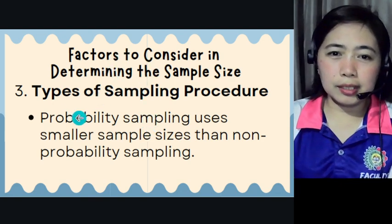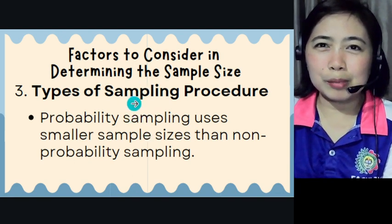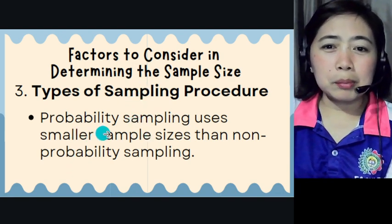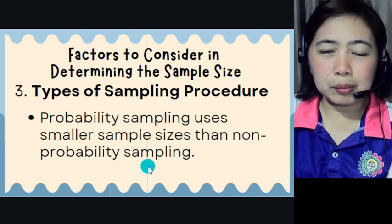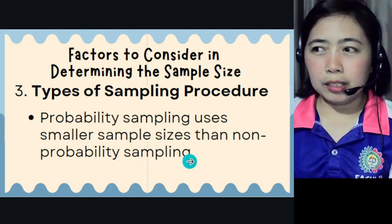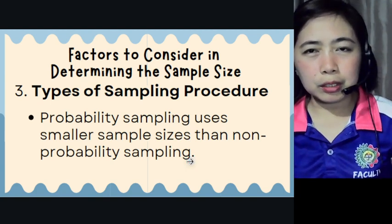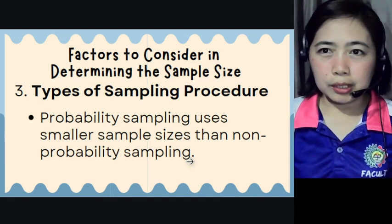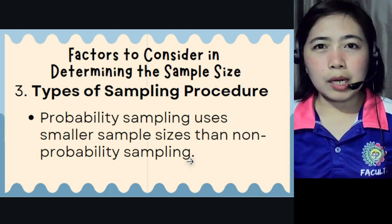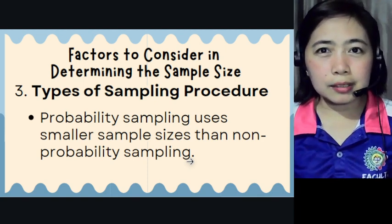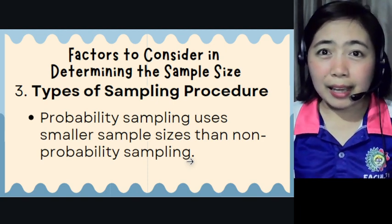Another factor is the type of sampling procedure. Probability sampling uses smaller sample sizes than non-probability sampling. In your proposal, your panelists may ask what sampling procedure or research sampling you are using, which determines how you gather your respondents and how you will have reliable data gathering.